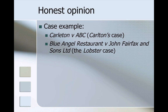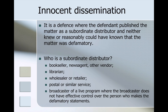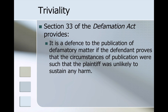The restaurant was awarded $100,000 in damages over the article — you can read more about that case in the textbook. The next defence is that of innocent dissemination. It is a defence where the defendant published the matter as a subordinate distributor and neither knew nor reasonably could have known that the matter was defamatory. A subordinate distributor includes a bookseller, newsagent or other venue, a librarian, a wholesaler or retailer, a postal or similar service, and a broadcaster of a live programme where the broadcaster does not have effective control over the person making the defamatory statements. There is also the defence of triviality — section 33 of the Defamation Act provides that it is a defence if the defendant proves that the circumstances of publication were such that the plaintiff was unlikely to sustain any harm.